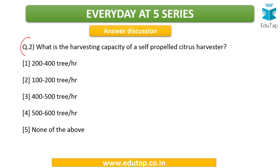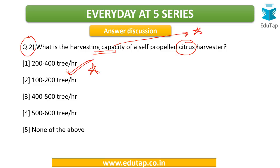The next question was: what is the harvesting capacity of a self-propelled citrus harvester? The answer is 200 to 400 trees per hour. Again, we are referring to the harvesting capacity of this implement. Make it a habit — whenever you study any implement, the first thing to look for is its capacity so you don't forget to memorize that data point.